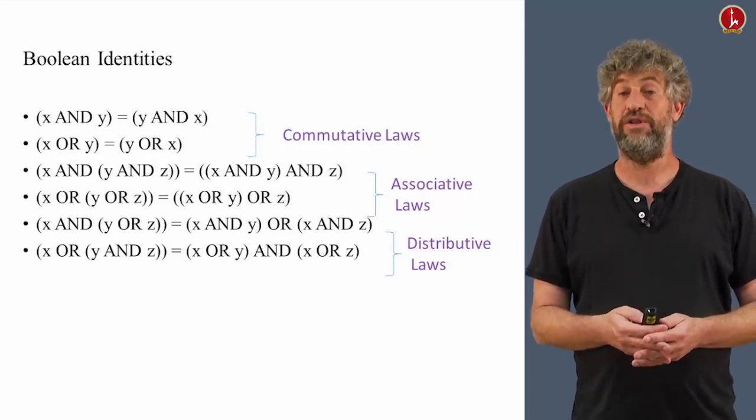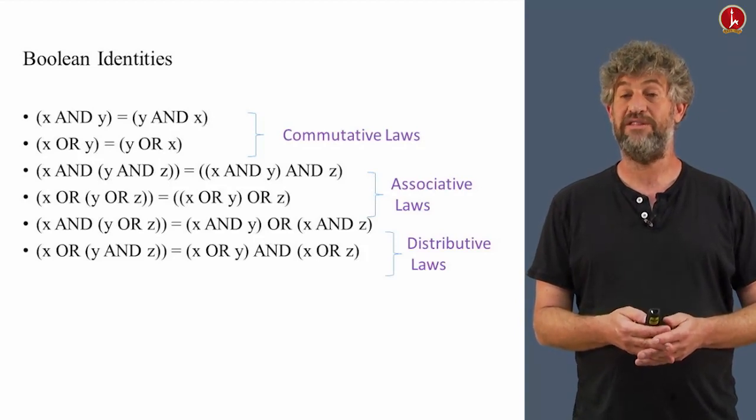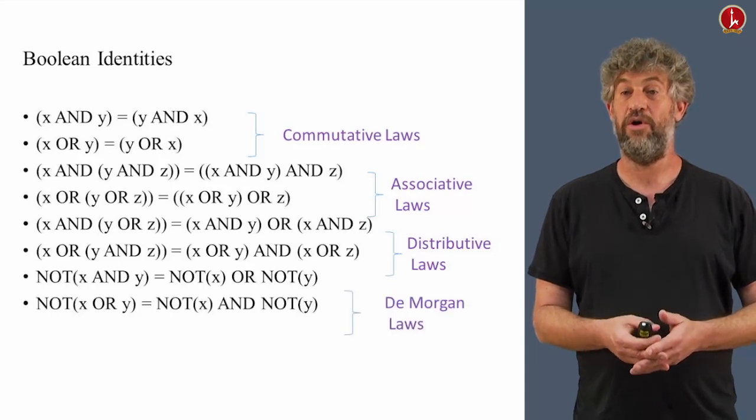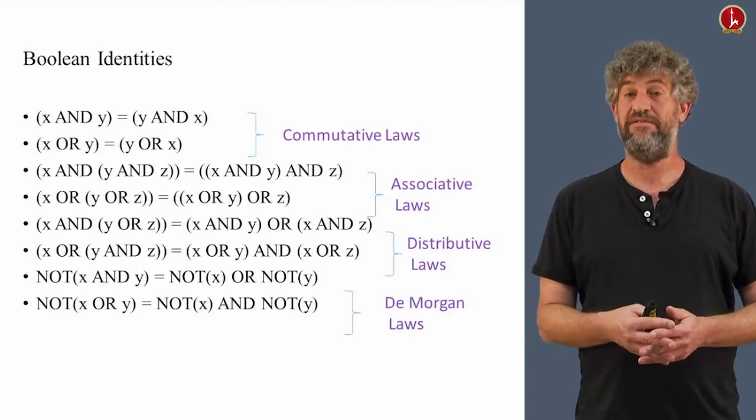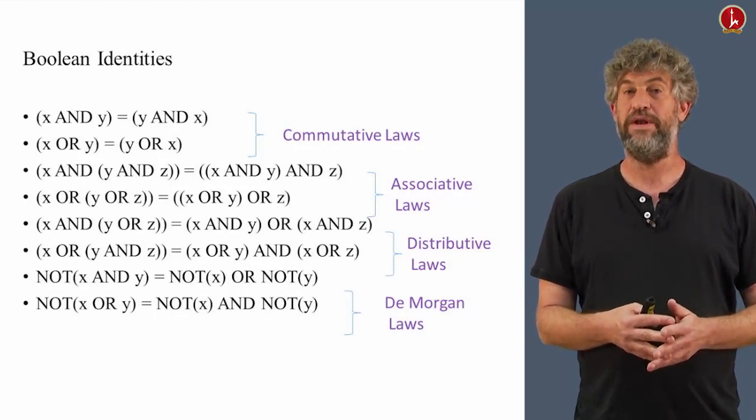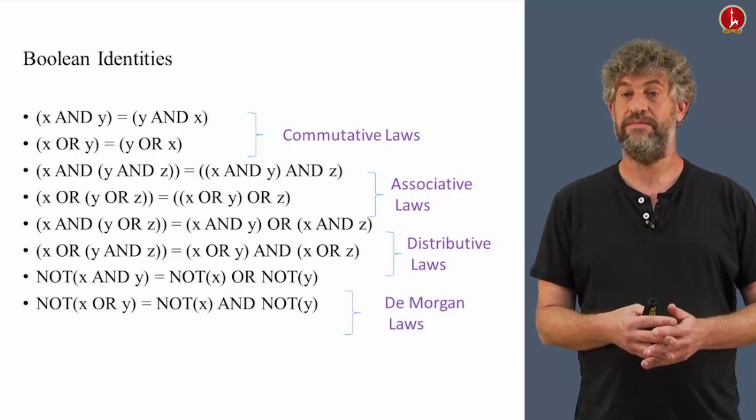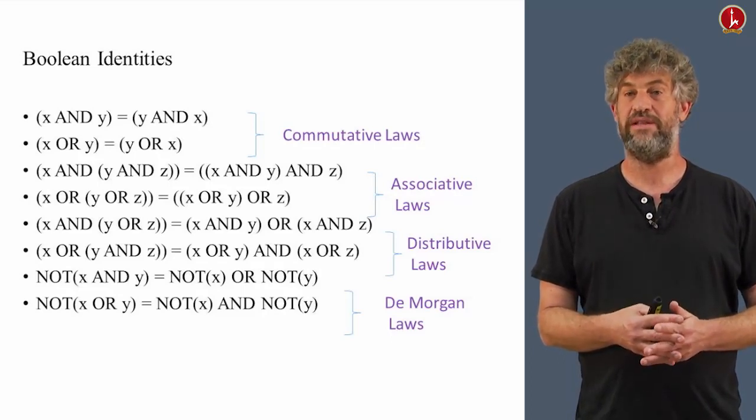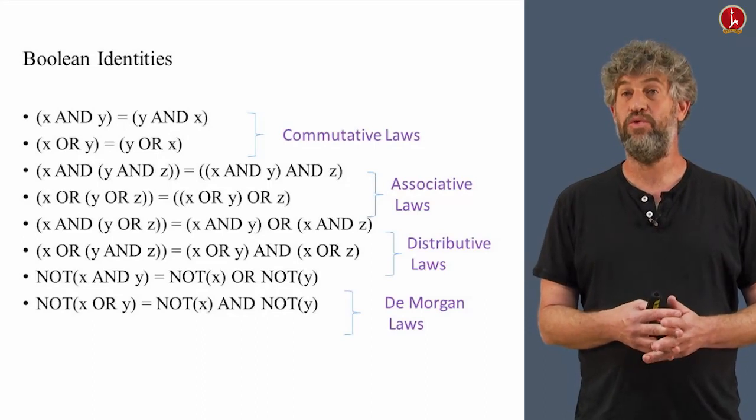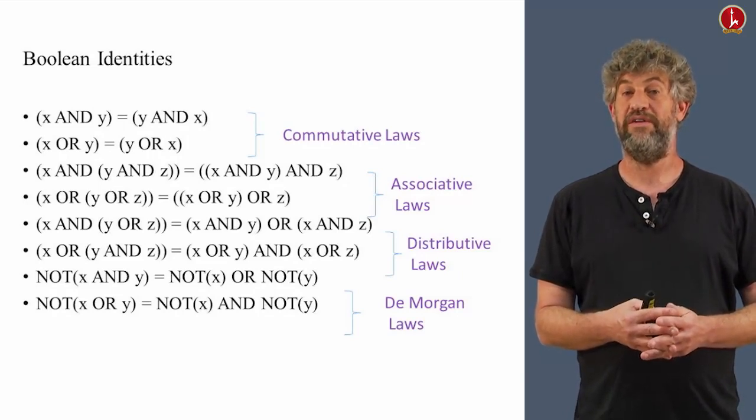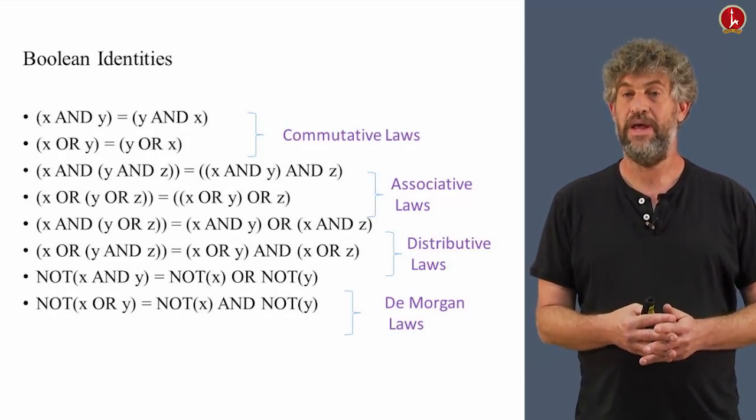There are also laws called De Morgan laws that govern how NOTs work, how they interrelate with AND and OR. These laws are called De Morgan laws. And they say the following interesting thing. If you take x AND y and do a NOT on all of that, that's equivalent to first doing NOT(x) and ORing that to NOT(y). And we have the dual one that if you have NOT(x OR y), that's exactly equal to NOT(x) AND NOT(y).